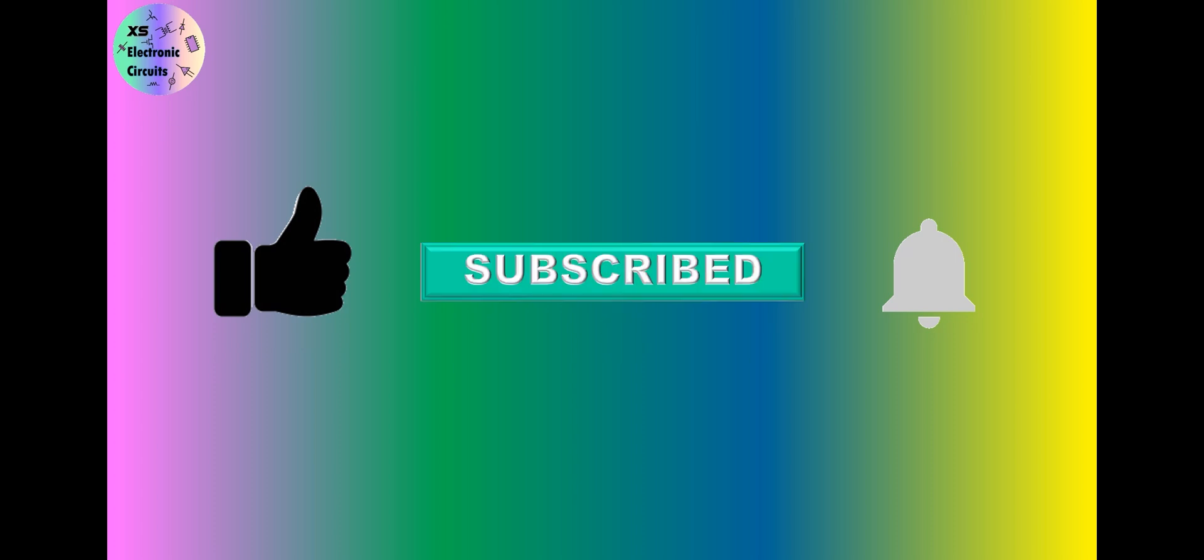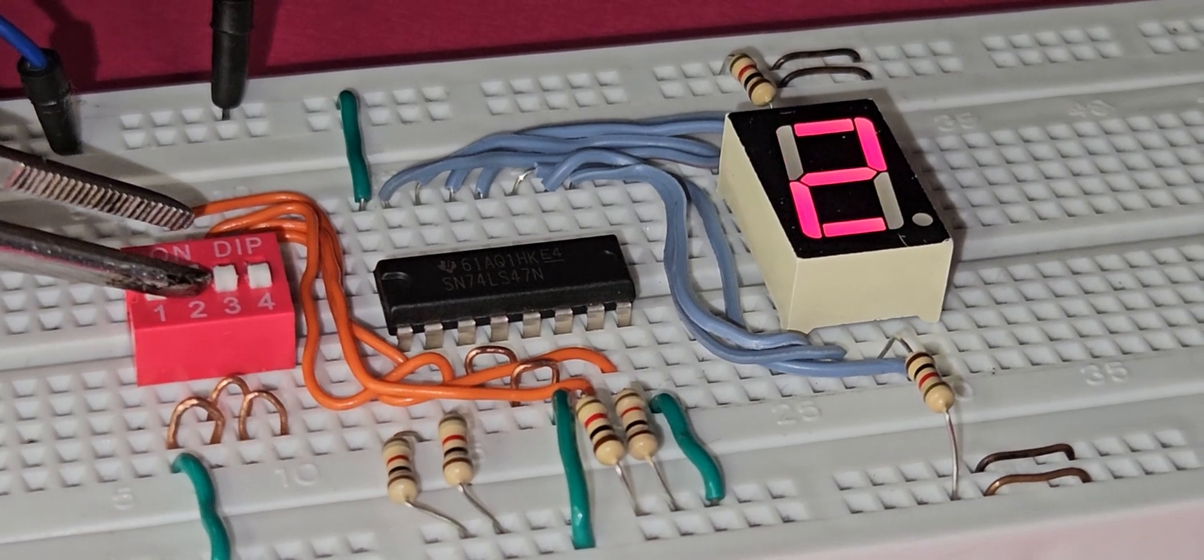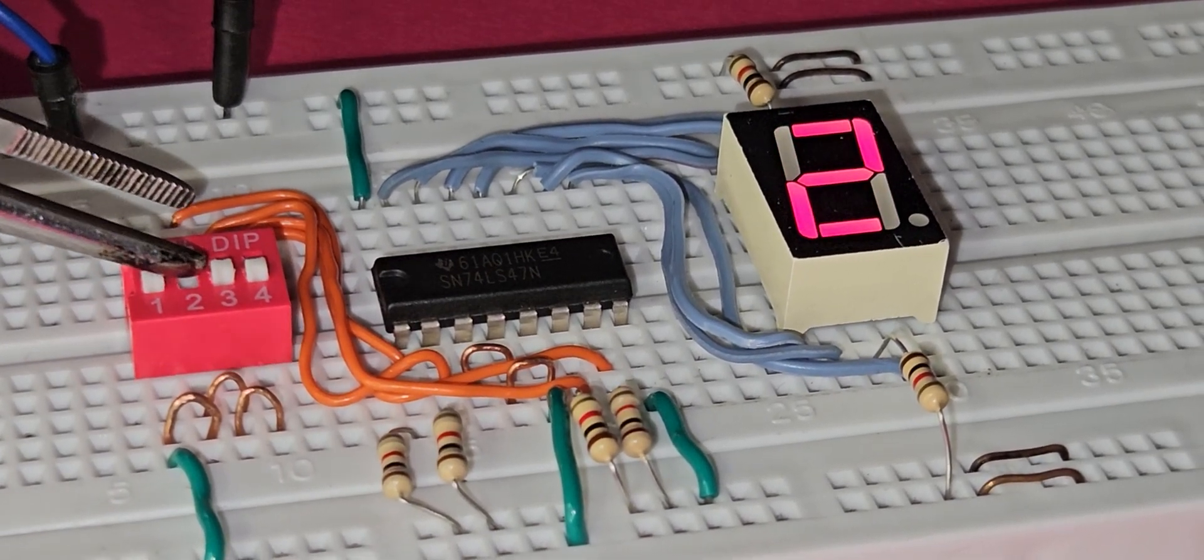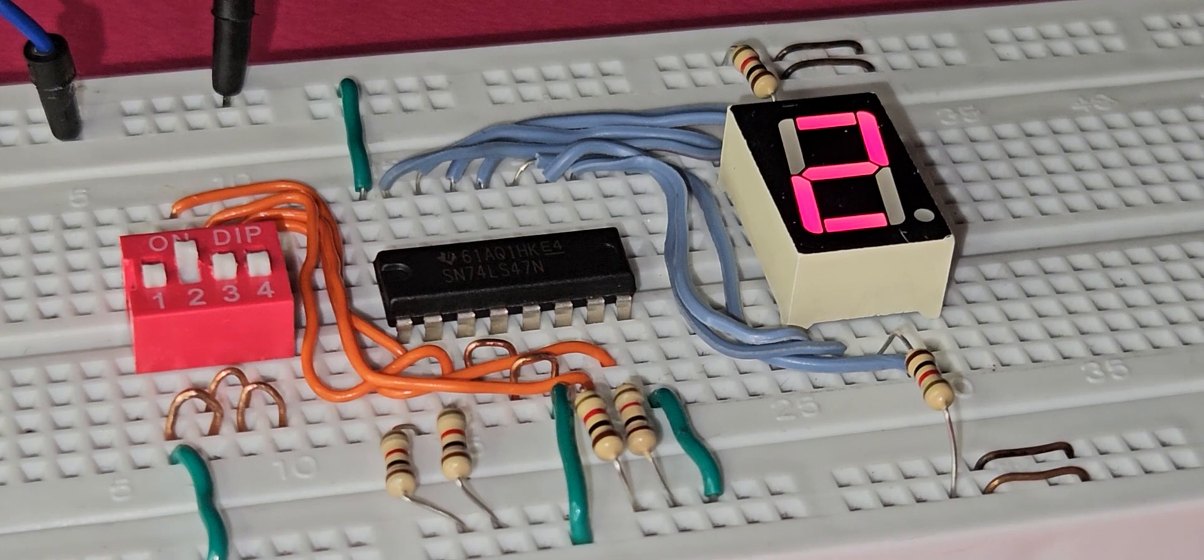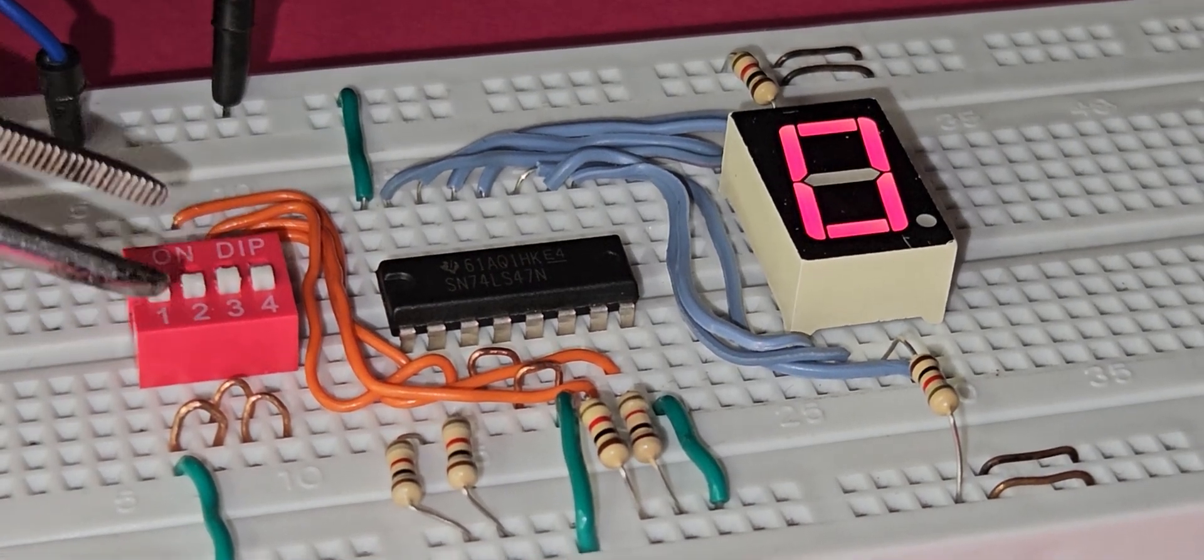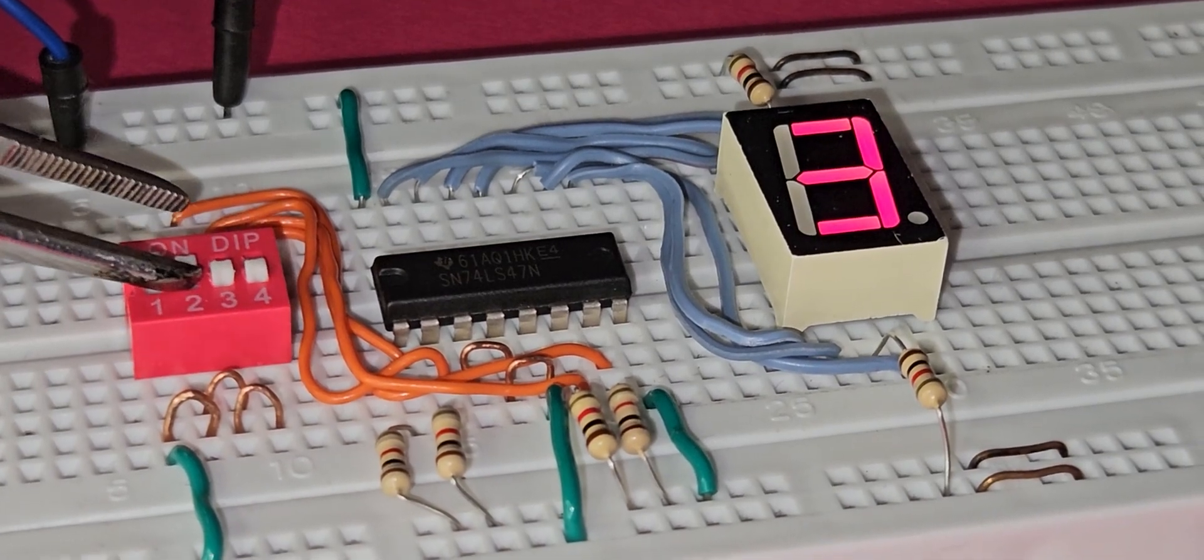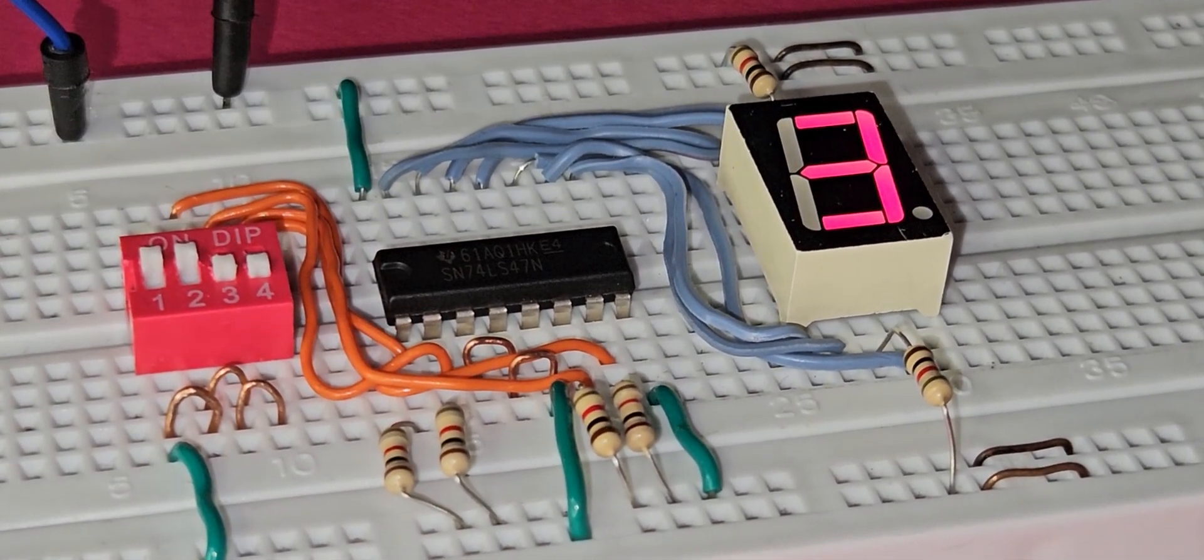The DIP switch has four inputs. Each one, when turned on, sends the value one to the IC input, effectively simulating a four-bit binary number. The IC output, which is connected to the seven segment, activates the LEDs that display the desired decimal number.